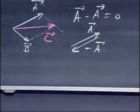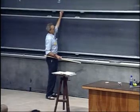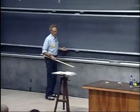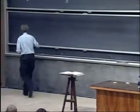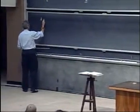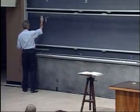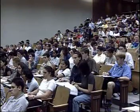And that brings us to the point of subtraction of vectors. How do we subtract vectors? So A minus B equals C.